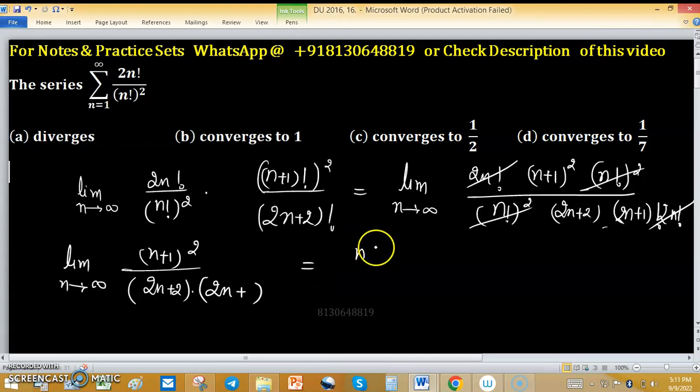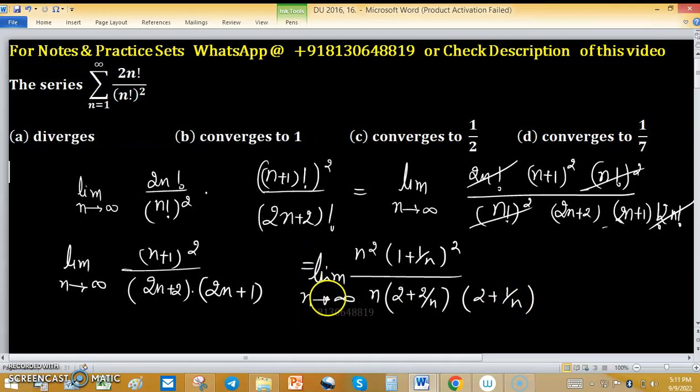Now take n common from the numerator brackets. So n square (1 + 1/n) whole square upon n outside (2 + 2/n) into (2 + 1/n). And the limit is going as n tends to infinity.